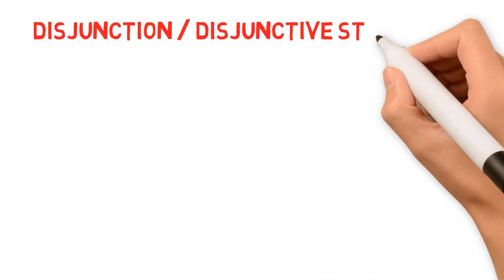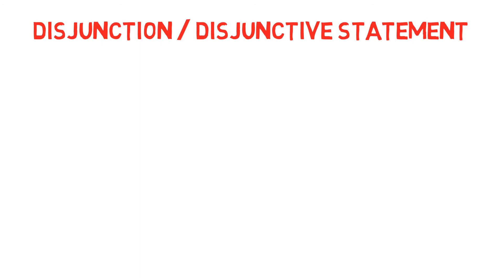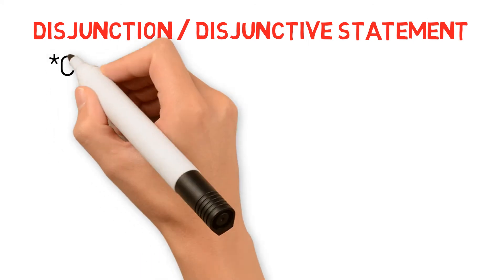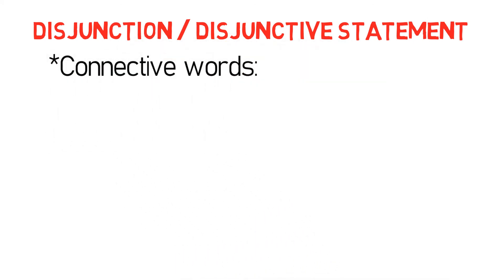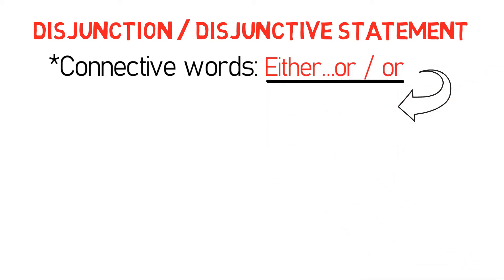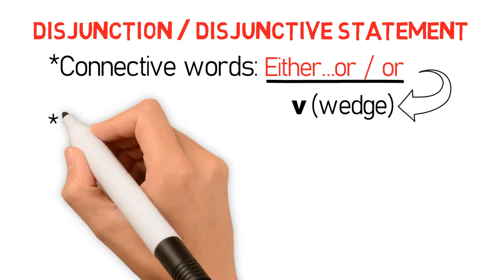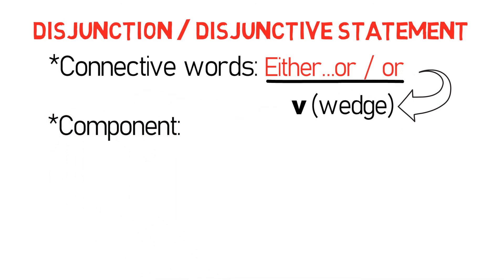A disjunction or disjunctive statement is a compound statement or proposition connected by the words either-or, or just or. As I discussed in the previous edition titled Propositions and Symbols in Symbolic Logic, the symbol for the connective either-or is the wedge. The component statements in a disjunction are called disjuncts.